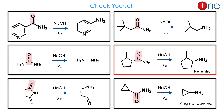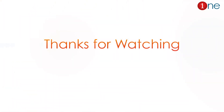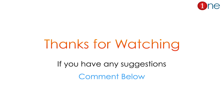Here I give an example to check your understanding. In the fourth example, you can see that retention of configuration will be there and the final product will have the preserved configuration. Similarly, if a strained ring system is also present, since the reaction is concerted, the ring will also not open. That's all from this video — I hope it was easy. Thanks for watching.